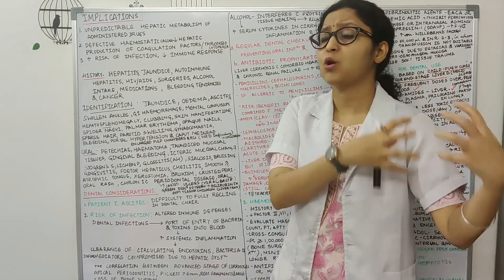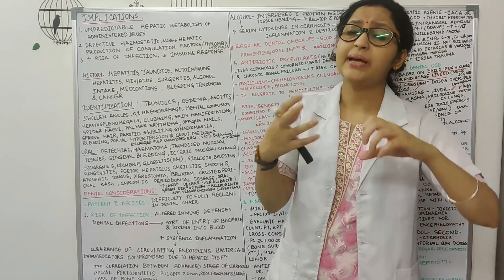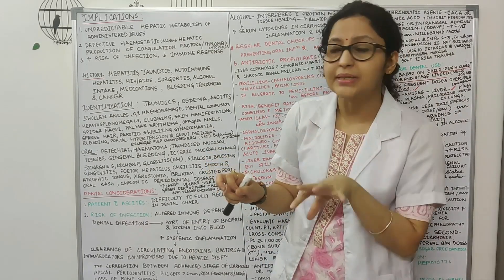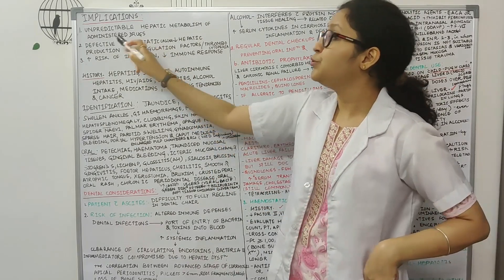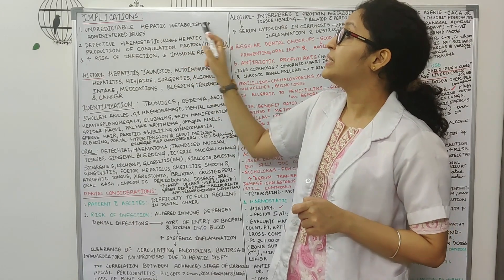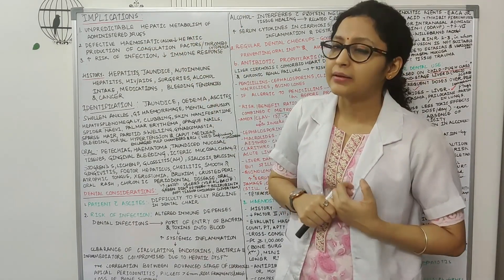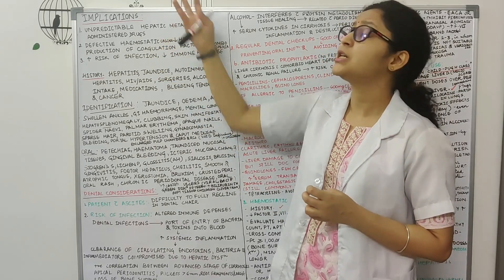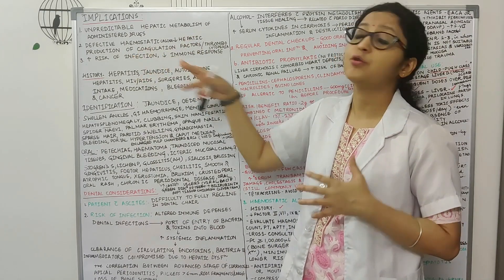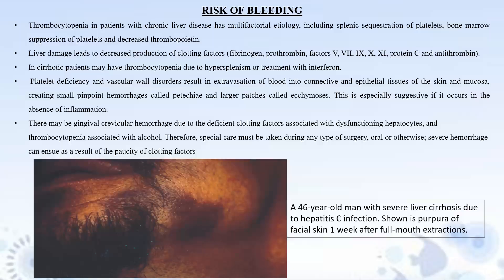Then some of the proteins and clotting factors are produced in the liver and whenever there is any kind of liver disease, the production of the clotting factors decreases and because of that you can see defective hemostatic cascade or decreased production of the coagulation factors. So you can see increased clotting time in these patients because there is reduced production of the coagulation factors and also there is thrombocytopenia.